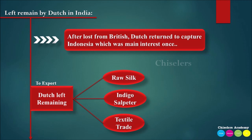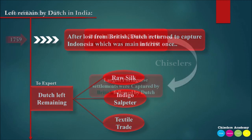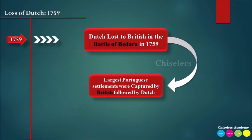The Dutch traded in salt, saltpeter, and textiles. A very important battle in this context is the Battle of Badara in 1759, one of the five key European battles. In this battle, the British and the Dutch fought each other.